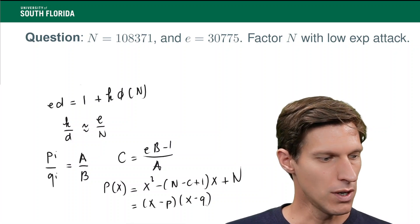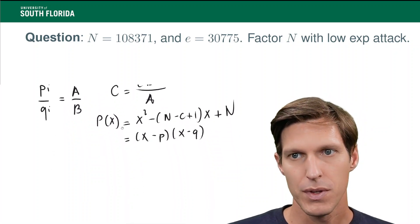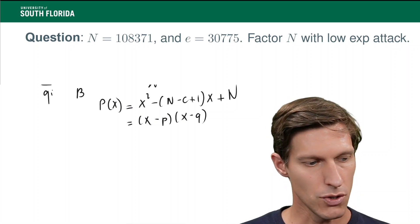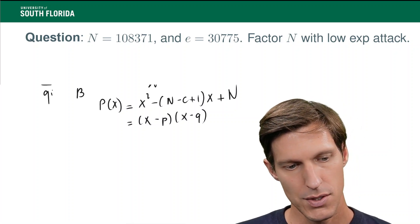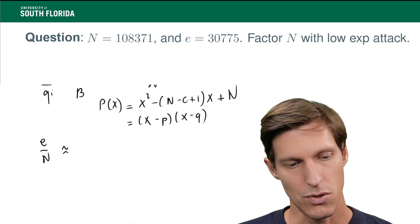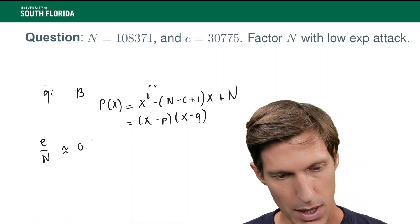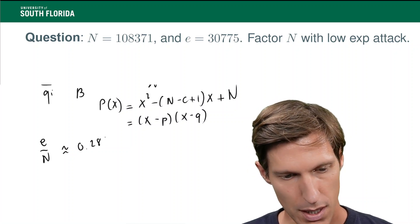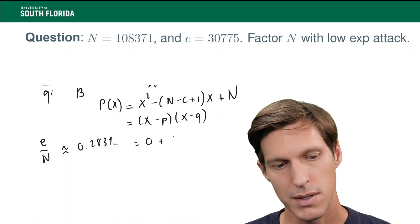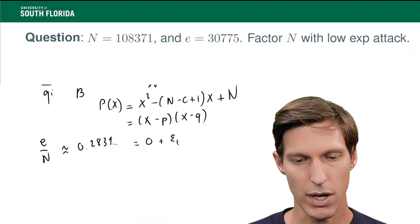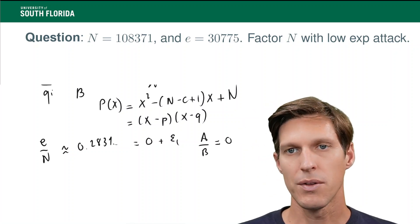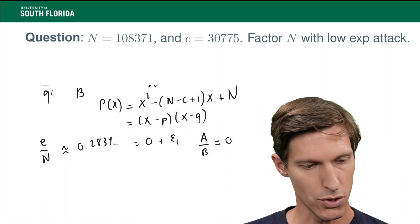Now, let's move on to our specific example here. We need to calculate the continued fraction expansion of e over n. So, e over n at the first term is approximately equal to zero point 28389 et cetera, and that equals an integer part of zero plus epsilon 0, which is the fractional part. At this stage, the conversion a over b is equal to zero, and there's really nothing to learn from this. So, we'll quickly move on to the next term of the continued fraction expansion.